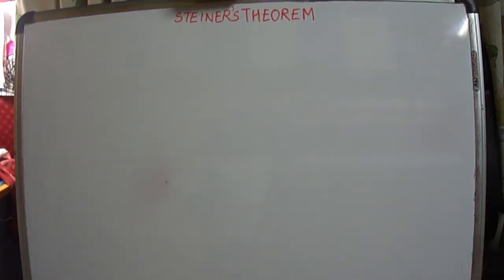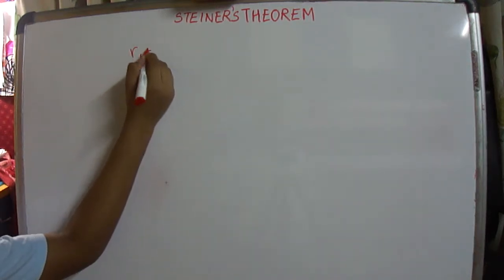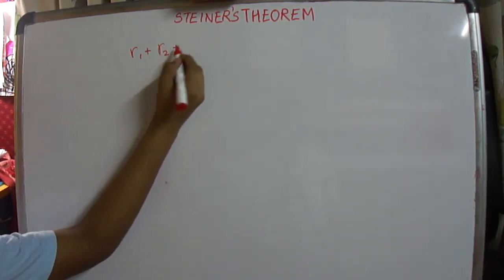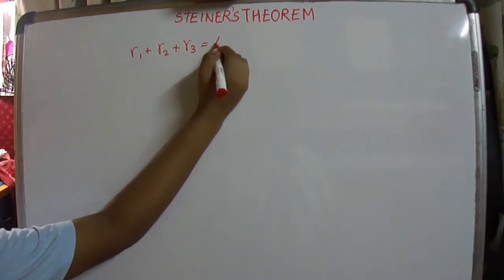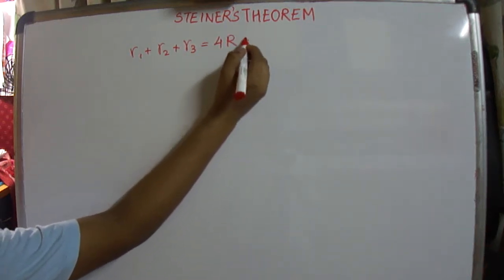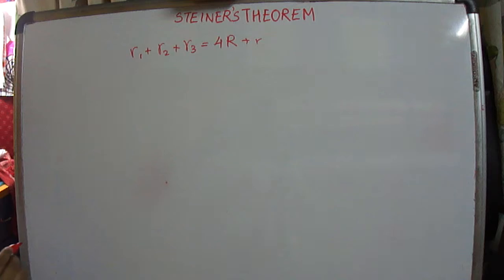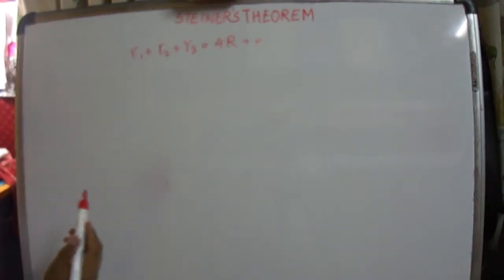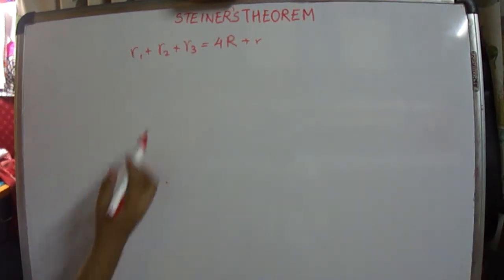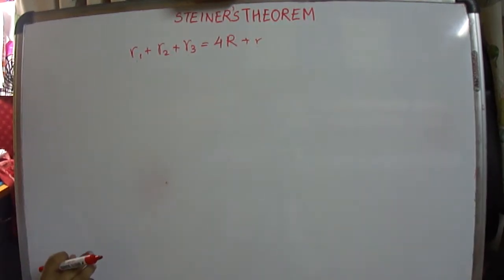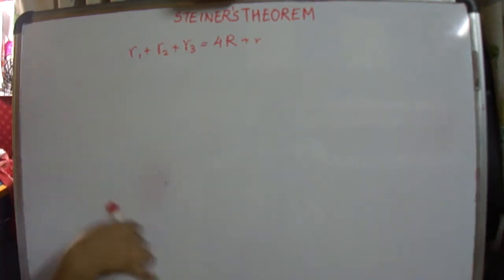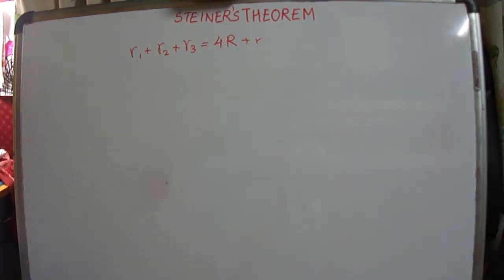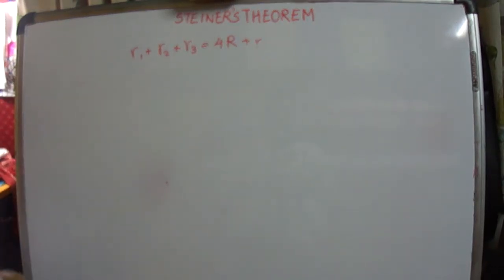Stainer's theorem is a popular theorem in geometry which says that R1 plus R2 plus R3 is equal to 4R plus r. R1, R2, and R3 are the exradii of triangle ABC, whereas r is the inradius and R is the circumradius. We have already found formulae which relate the sides of a triangle to these quantities.